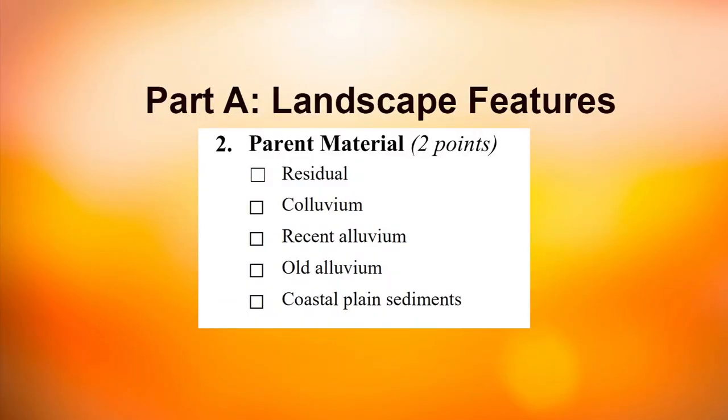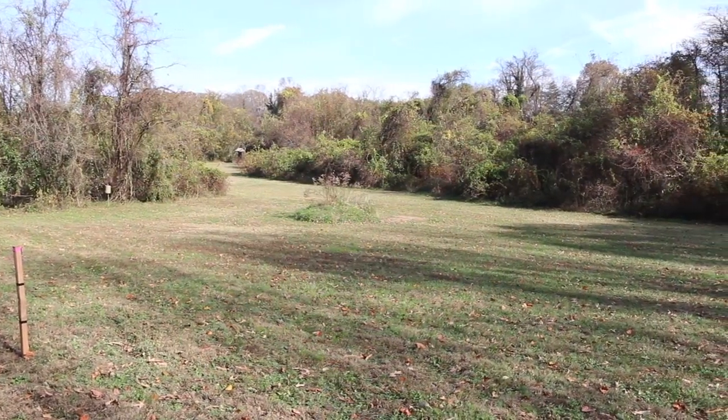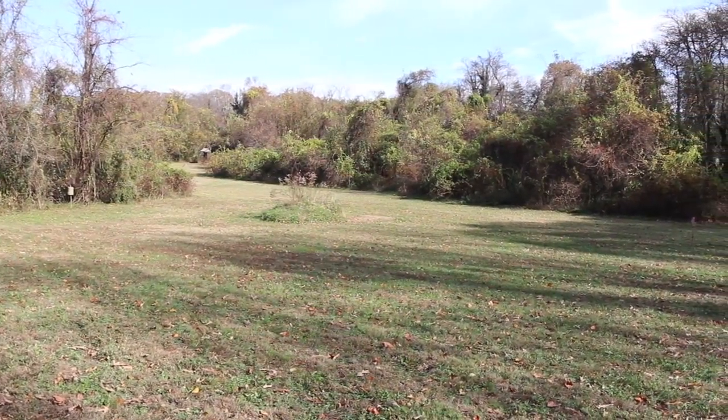The second item is parent material. That has a paramount effect on the soil series that we select. The parent materials we identify here are residual, colluvium, recent alluvium, old alluvium, or coastal plain sediments. Certainly here today in Anne Arundel County on Goshen Farm, we're on coastal plain sediments — the unconsolidated sediments that in the geologic past were deposited, and that's what the soil has formed in.